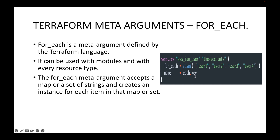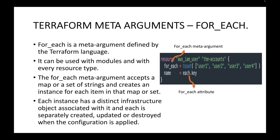In the name we use each.key, so instead of defining four resource blocks for four resources, we define one resource block using for_each. Each entry is considered a unique user. You can think of this as a loop — first it creates user one, then user two, then user three, then user four. This is a set of strings; you can also create a map to create multiple resources. Each instance has distinct infrastructure associated with it and is separately created, updated, or destroyed when the configuration is applied.